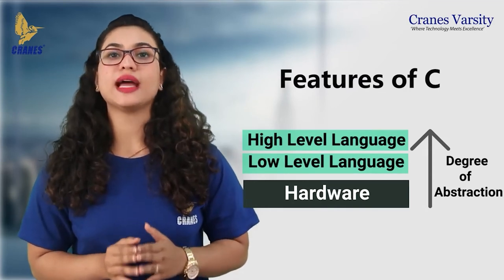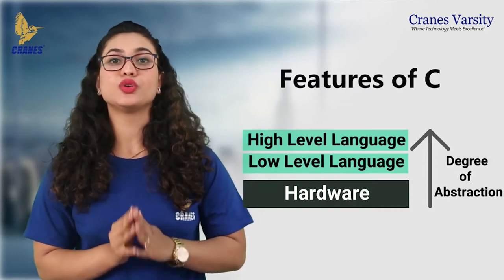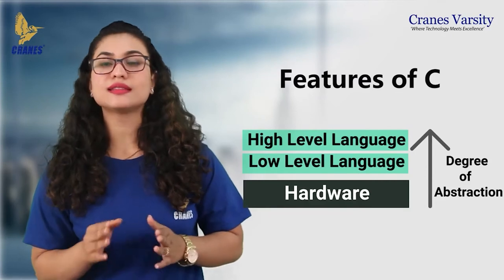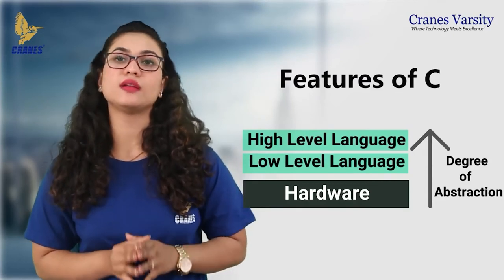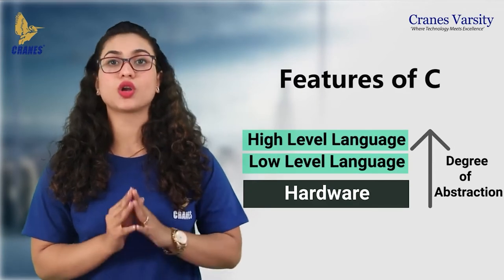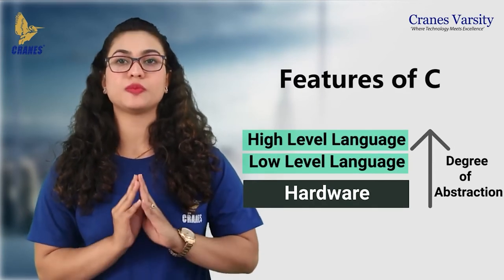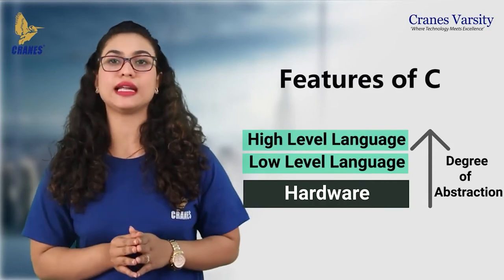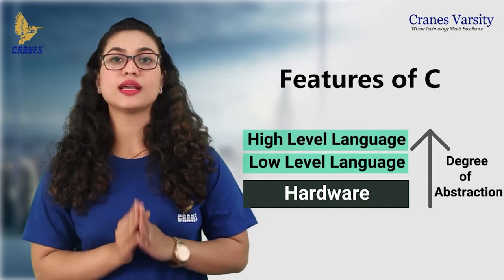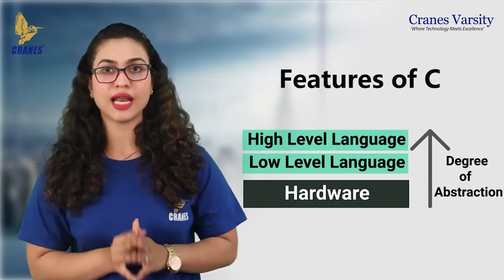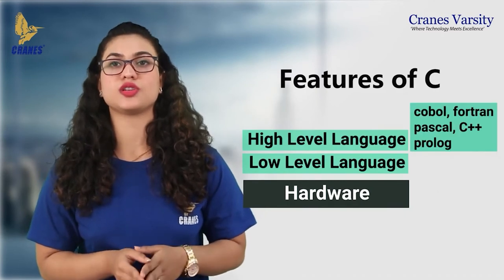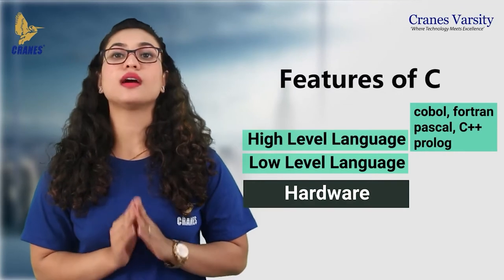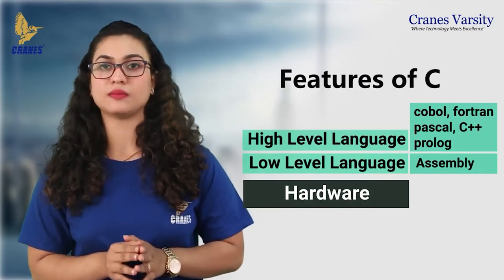For example, when you write data into a file, you just save it. You don't bother where it is saved, how it is saved, how much memory it consumes. When you talk about low level, low degree of abstraction means more effort by the user — you need to know each and every internal detail of your computer. High level programming languages include Cobalt, Fortran, Pascal, C++, Prolog, etc. For low level language, the example is simply assembly level language.